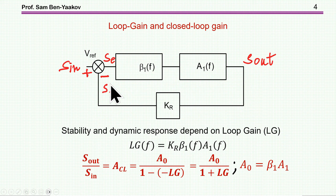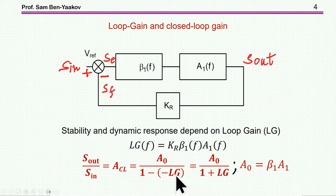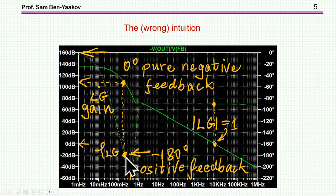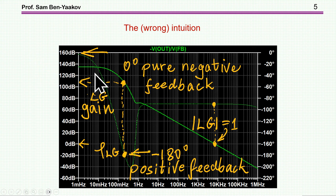We know that the transfer function between the input and output can be expressed in this equation in the Laplace domain. This equation comes from the fact that the loop gain has an inherent phase reversal — that is, negative feedback. This is the reason for the minus sign, so this system is already assumed to be negative feedback. We end up with this equation in which NG is the absolute value of the loop gain.